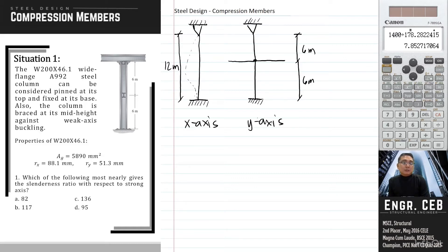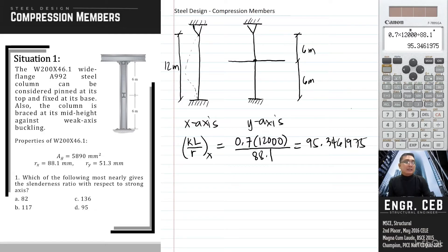For the first problem, we are asked to solve for the slenderness ratio with respect to the strong axis, in which the strong axis in this case is the x-axis. So let us solve for the slenderness ratio, KL over R with respect to x. K is the effective length factor. If we have a pin support and a fixed support, the corresponding theoretical effective length factor is 0.7. The length is 12 meters, converted to millimeters. For the radius of gyration, we have 88.1. We have 95.346, and that is letter D.